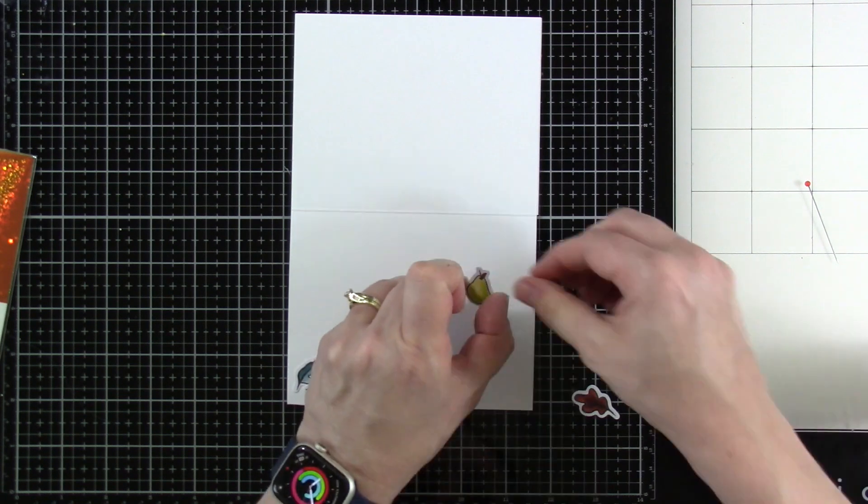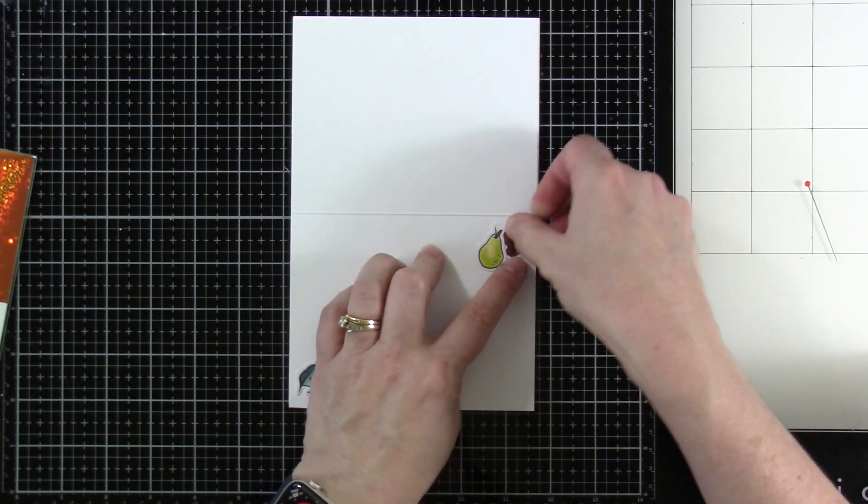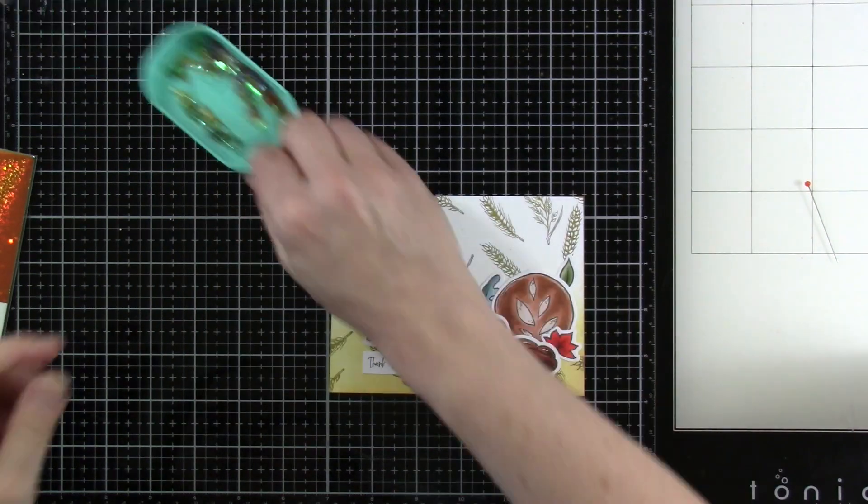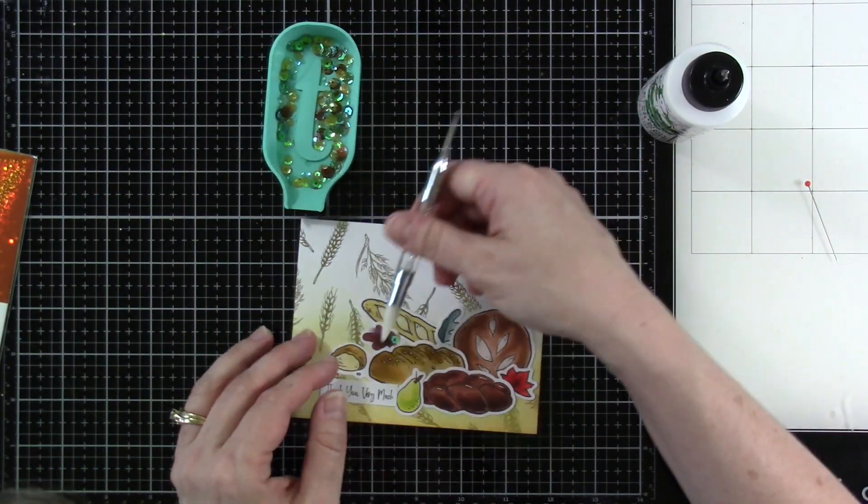So I would say 95% of the cards that I make, I do put something on the inside. It gives the recipient a little bit extra to kind of take a look at. And then I'm going to bring in the sequins that came in the kit.